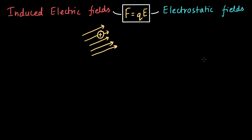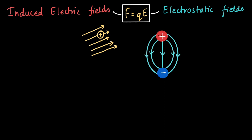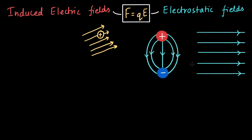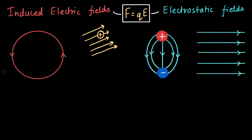One difference between them is that electrostatic fields start and stop on a charge. So if you have a positive charge and a negative charge, the electrostatic field lines will look like this — they always start from a positive charge and end on a negative charge. A uniform electrostatic field implies there must be a plane of charge. An induced electric field, on the other hand, makes loops just like magnetic fields — geometrically more like a magnetic field, with no charge source. It can only be created by a changing magnetic field.